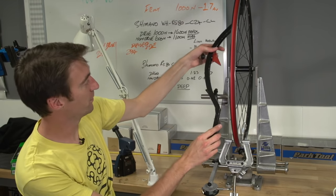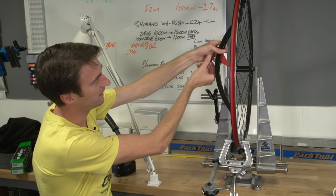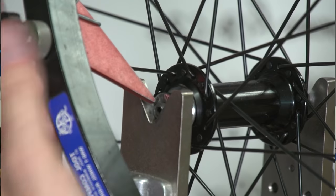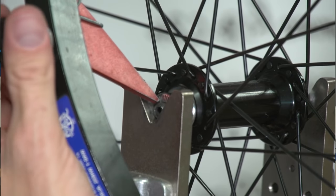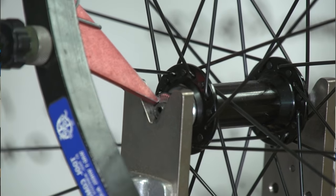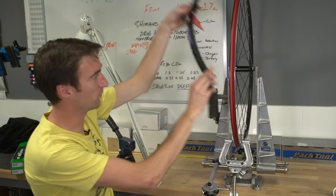Effectively, you just put the two ends of the tool against the rim itself, and you wind this part in until it meets the part of the hub which meets the internal part of the fork or the frame on the bike. Once you've got that, simply take it away.